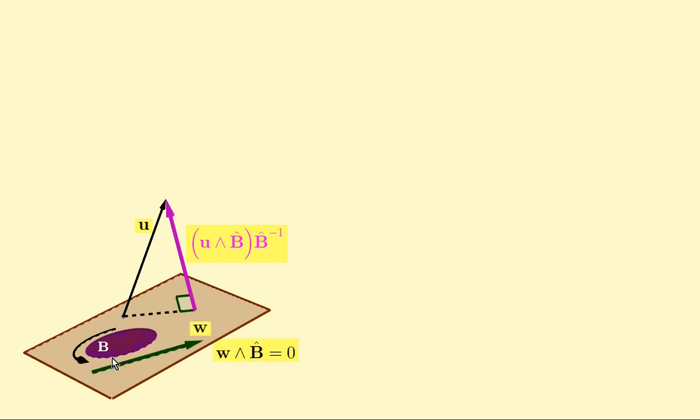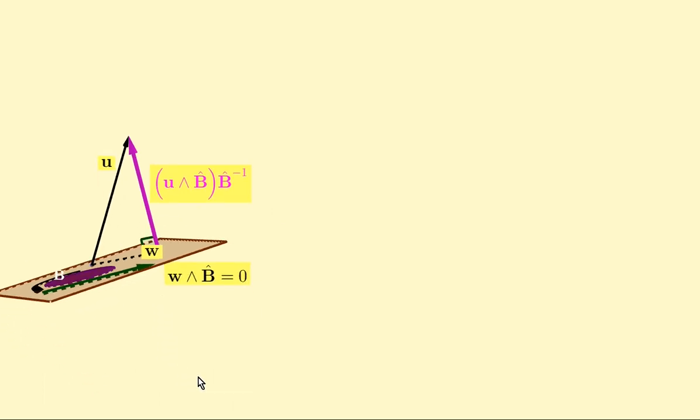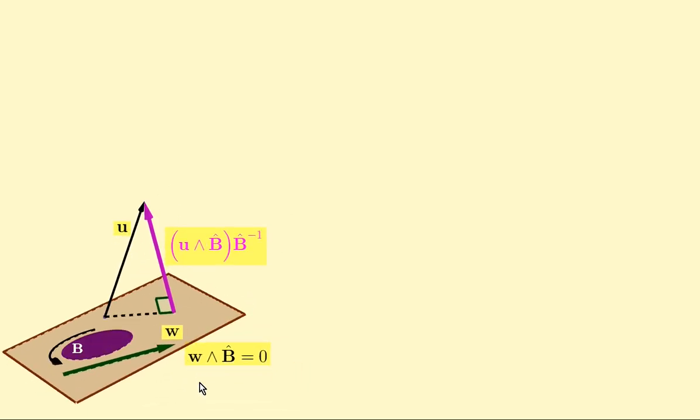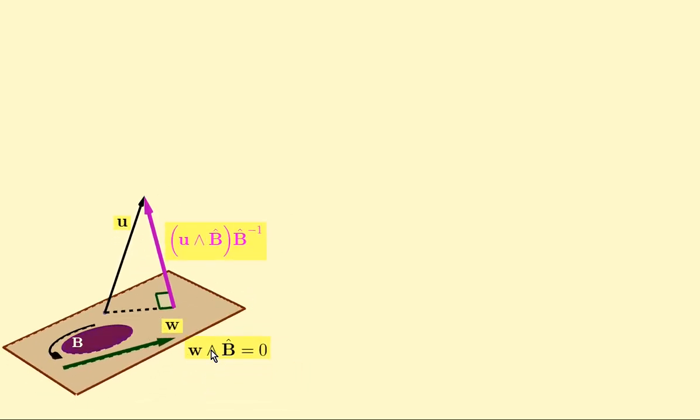The second idea that we'll use is that for any vector that is parallel to the bivector, in this case W, the outer product of that vector with the bivector is zero. So how will we use these ideas?